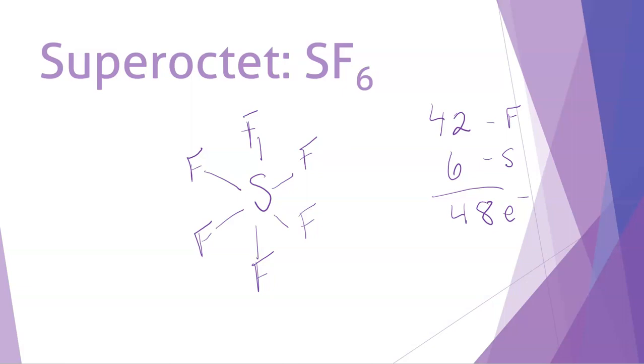Each of our fluorines has one bond. And if we add three lone pairs to each fluorine, then each fluorine has eight total electrons. There are six fluorines. So that makes up our 48 electrons. And the sulfur is contented with its 12 electrons.